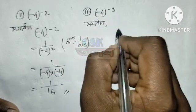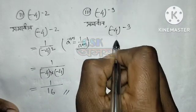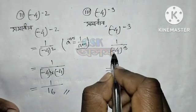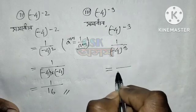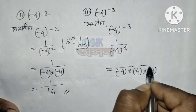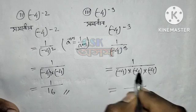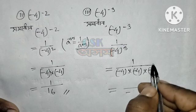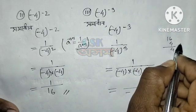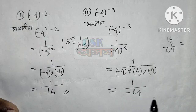Minus 4 to the power minus 3. So minus 4 to the power minus 3 means three factors of minus 4: minus 4 into minus 4 into minus 4. Minus minus plus, plus minus gives minus. Result is around 64.